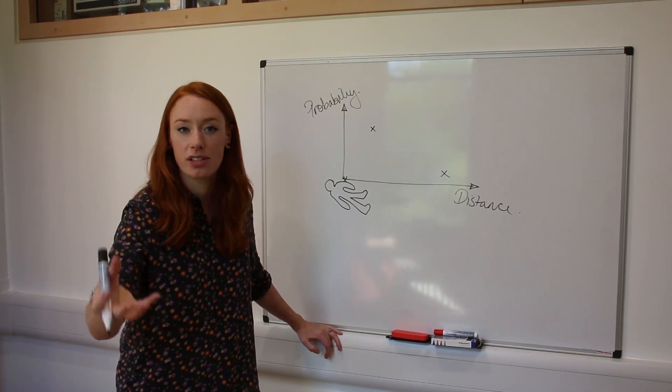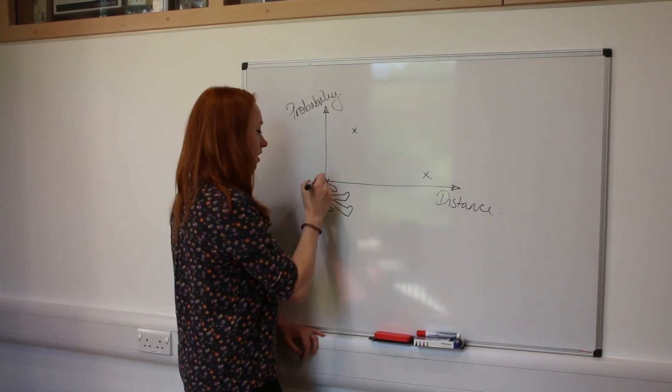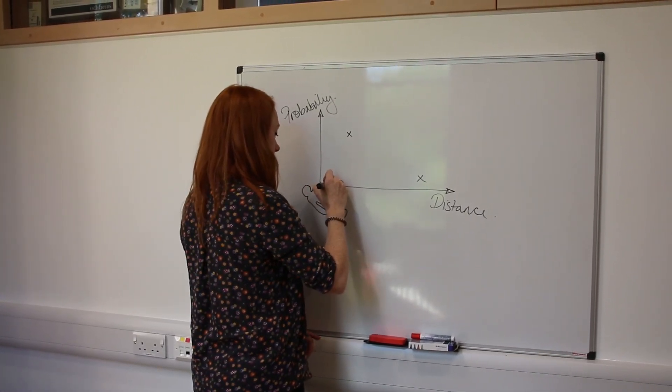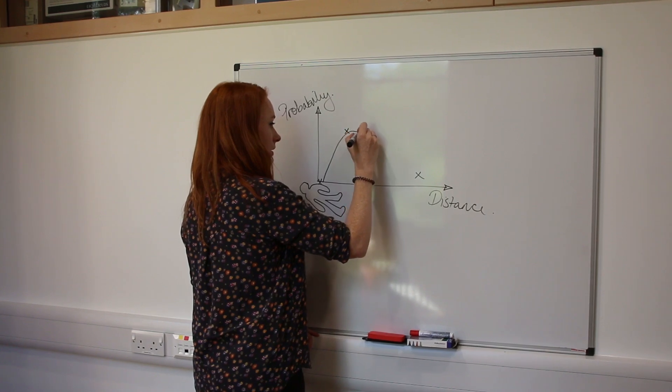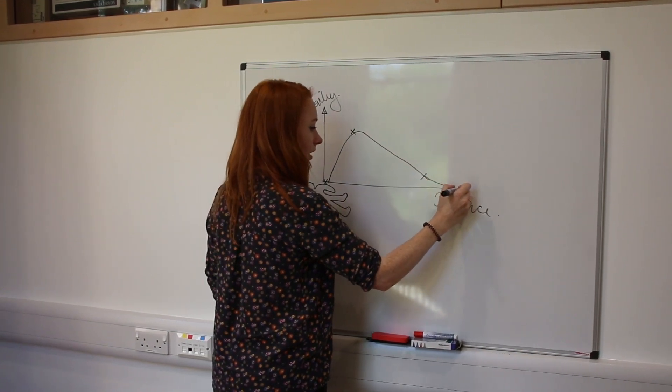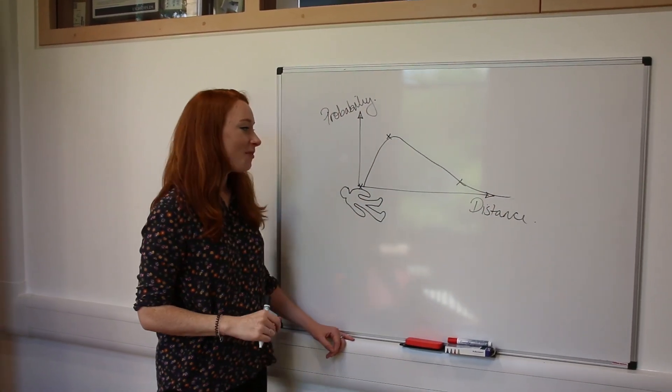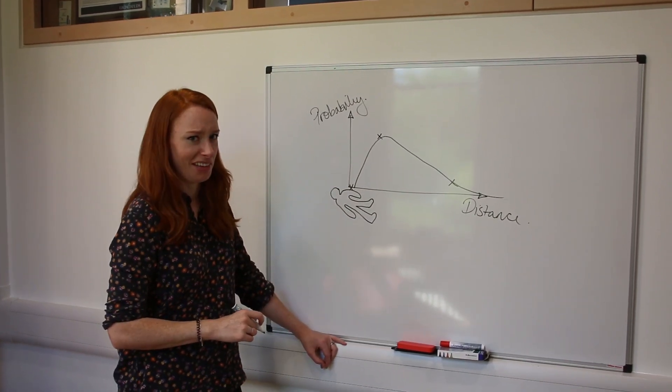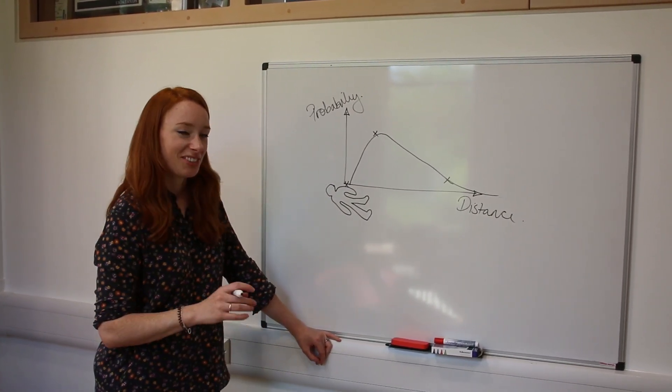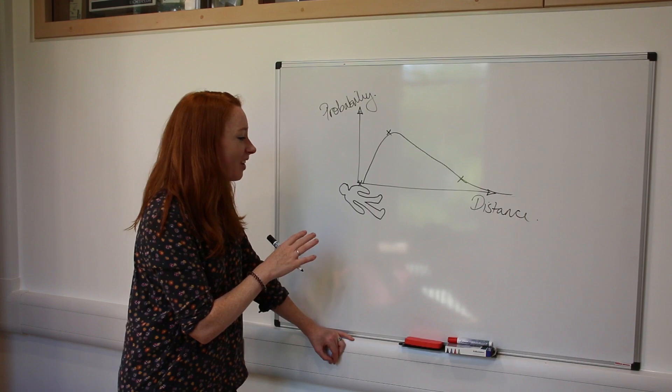You don't often get people travelling from Scotland to London to commit crime. So what you end up with is a curve that looks a bit like this. Oh god, I missed that completely. There we go. Drawing's not my forte. That's really bad. Whatever.